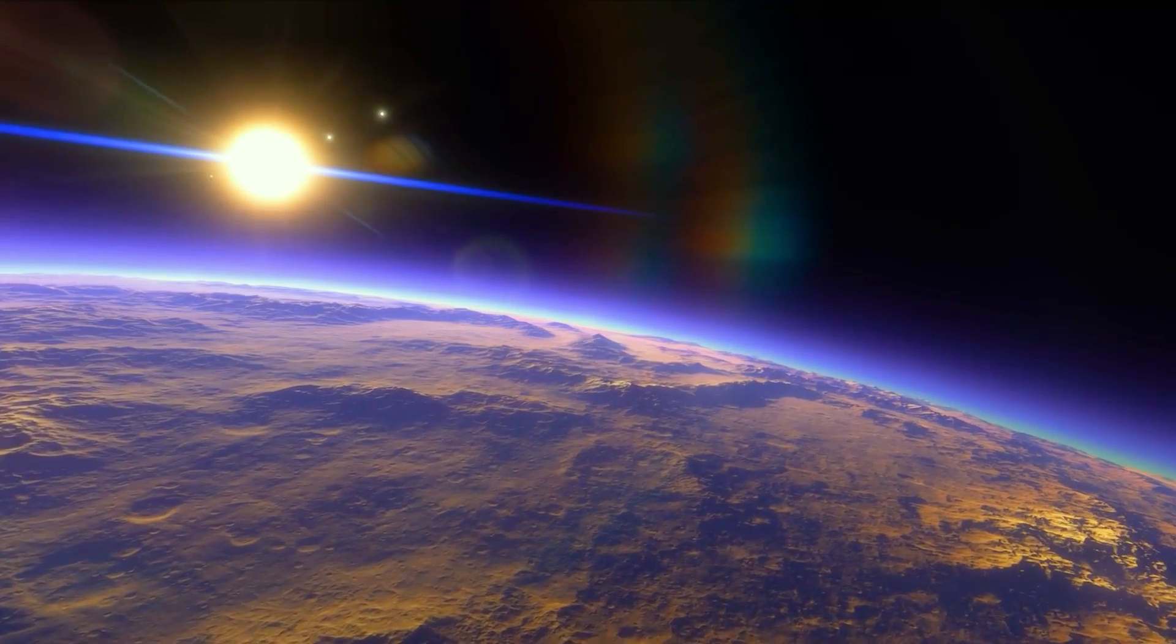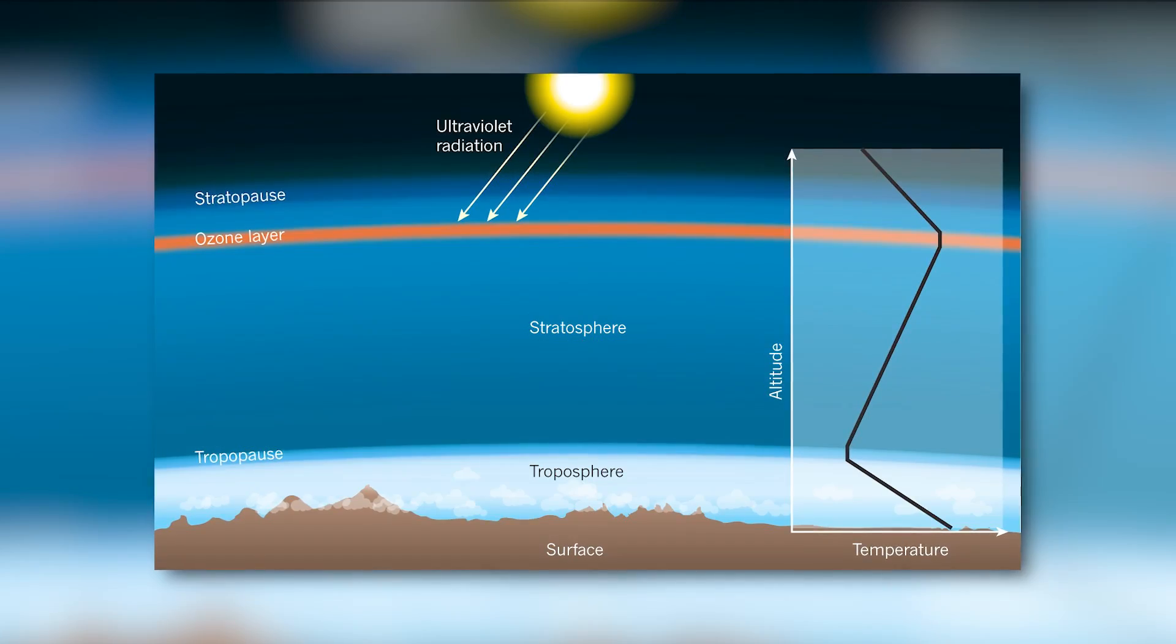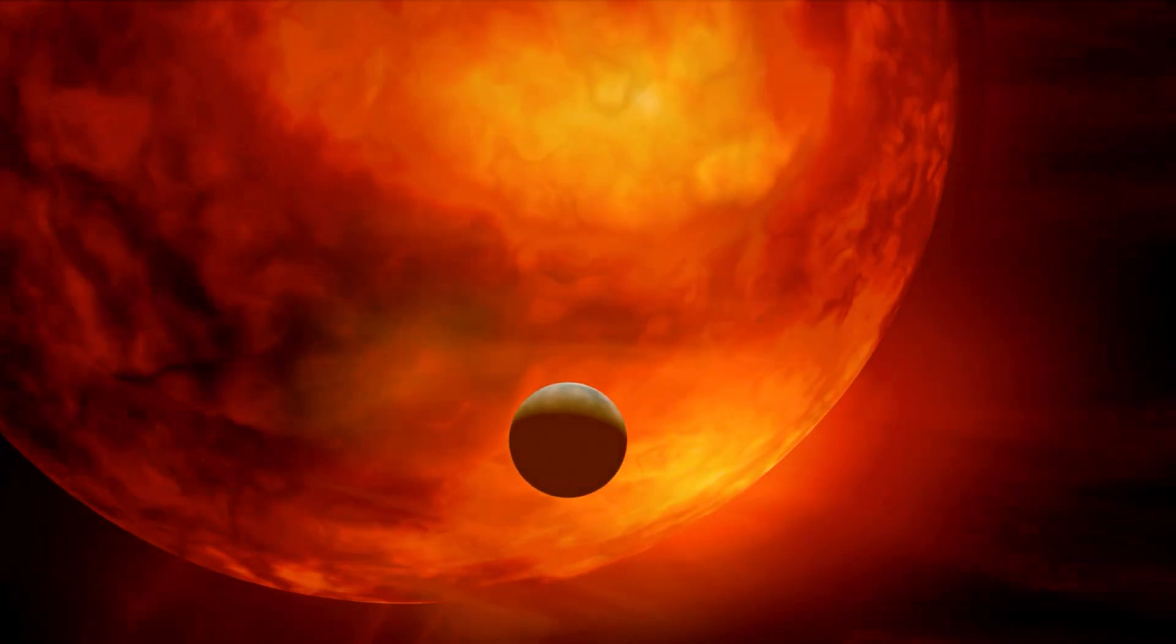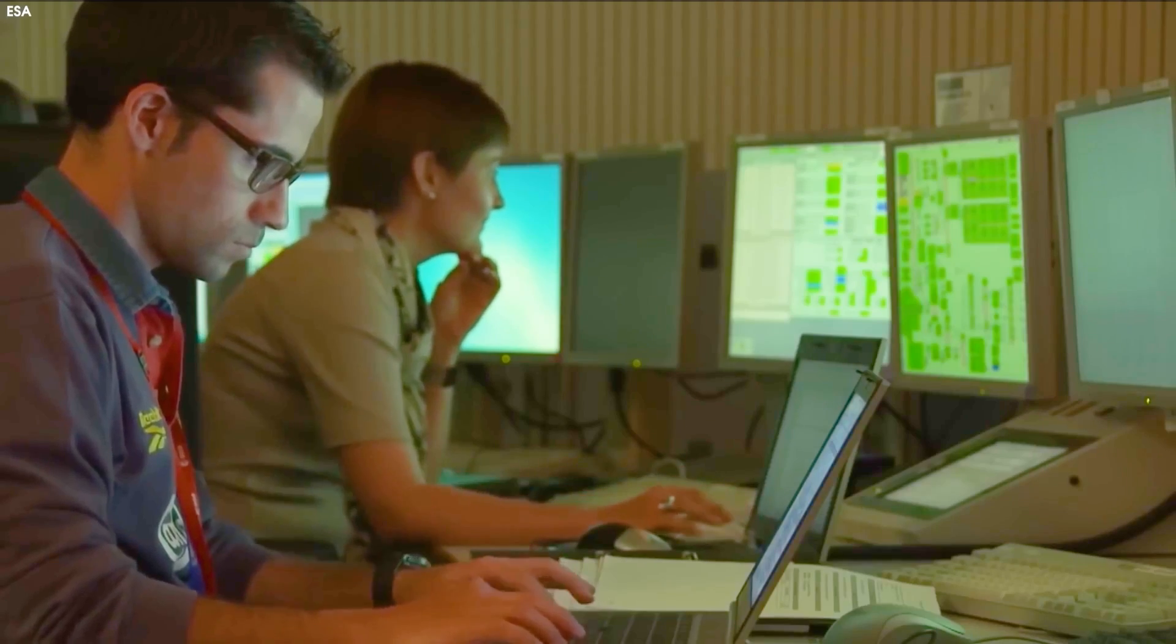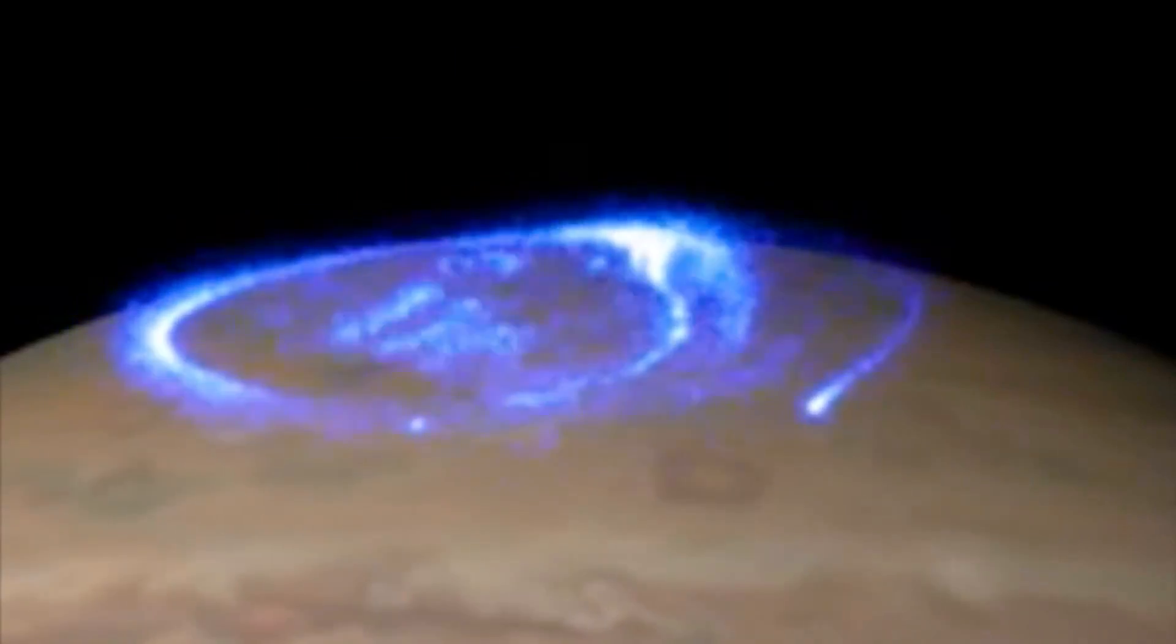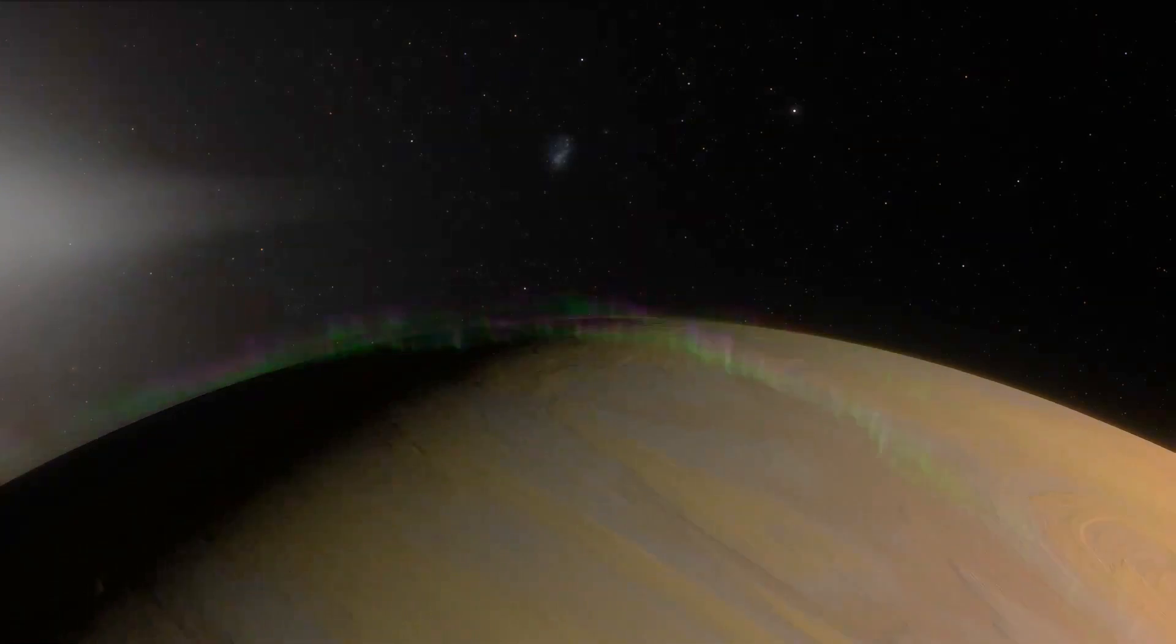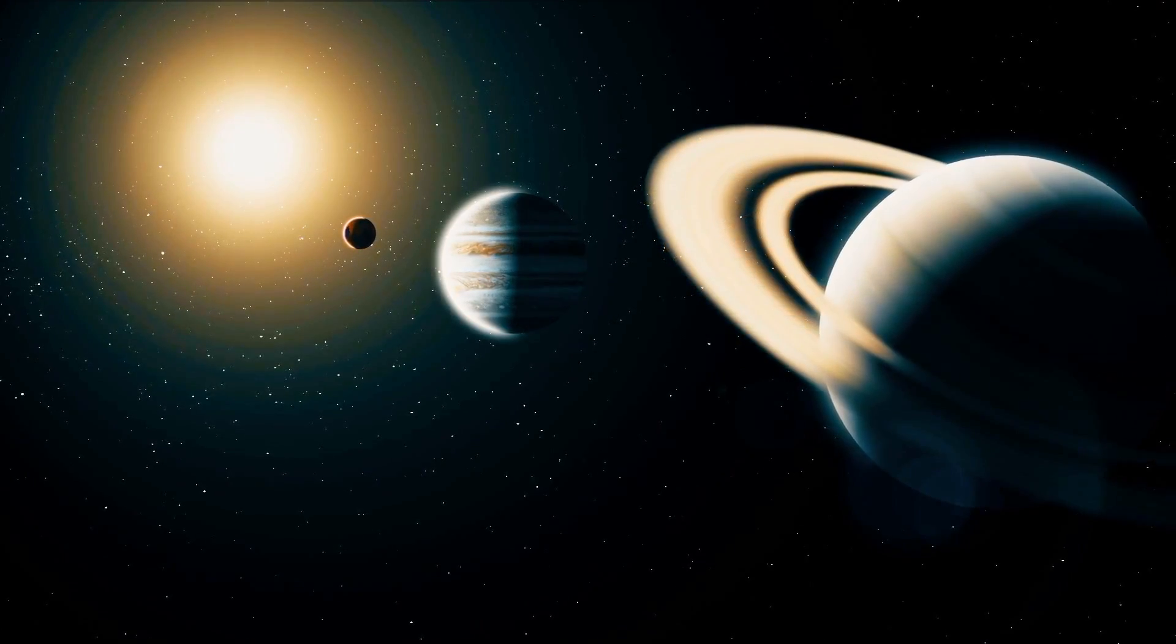Although this type of event has previously been observed in planets with a nearby star that has the ability to heat the stratosphere, it is surprising to witness it in an object without a visible external heat source. For hints, the astronomers examined Jupiter and Saturn, planets with their own aurora. They came to the conclusion that W1935 might be receiving heat from interior mechanisms, similar to those on Jupiter and Saturn.